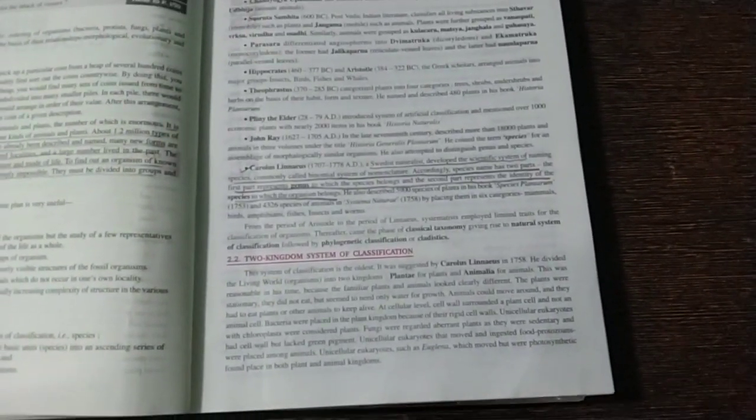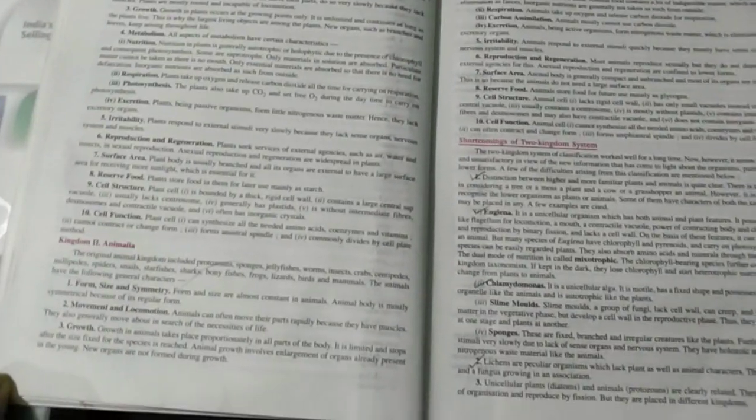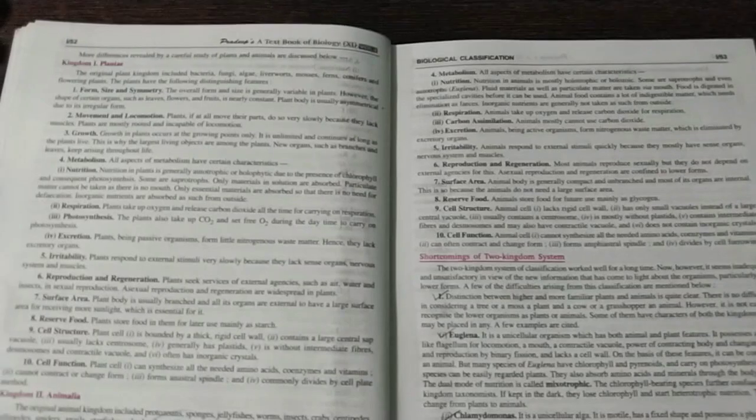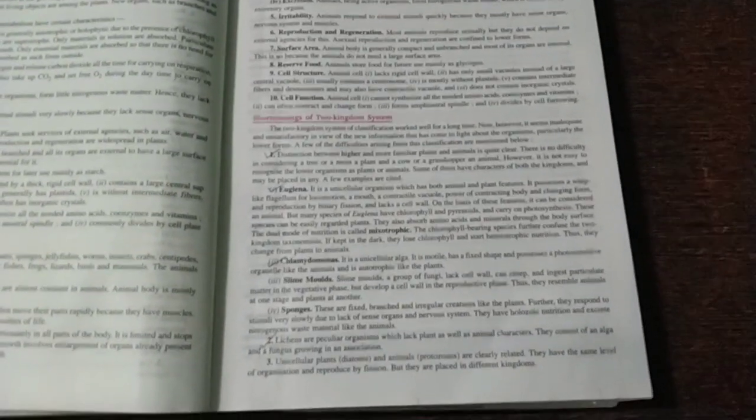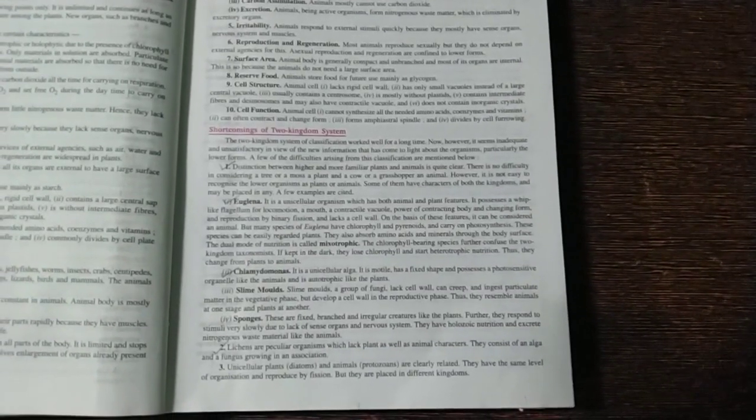Now, two kingdom system of classification, which is not given in your NCERT. You can see kingdom Plantae, kingdom Animalia. Two kingdom classification is given. It's given very nicely in this. It is hardly given in NCERT. It is not given at all. Shortcomings of two kingdom, that is, failure of two kingdom classification. Failure of two kingdom system of classification is also given. This is not given in NCERT.